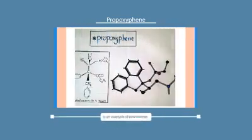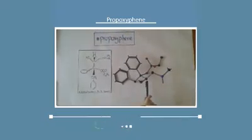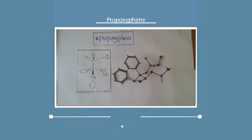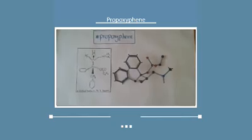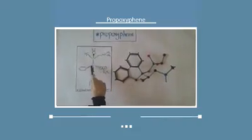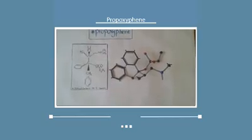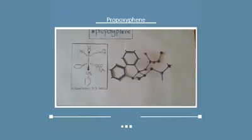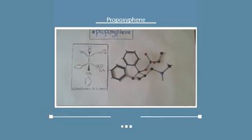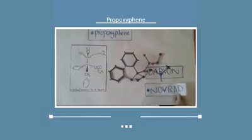Propoxyphene is an example of enantiomers. Propoxyphene has two chiral carbons: chiral carbon number one and chiral carbon number two. Since propoxyphene has two chiral carbons, it has four isomers. Two of these isomers are used as drugs: Darvon and Novrad.